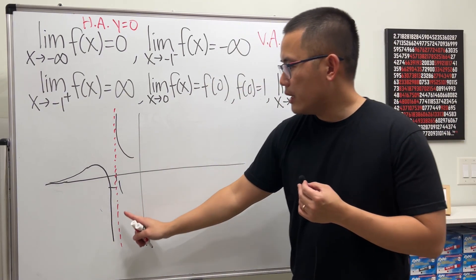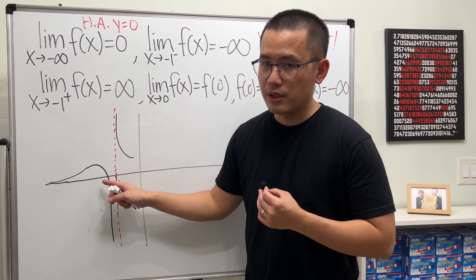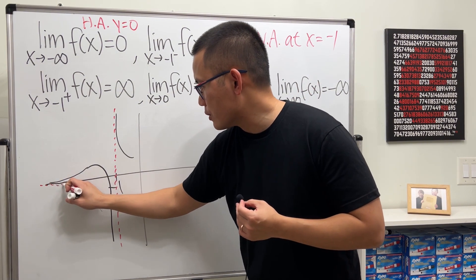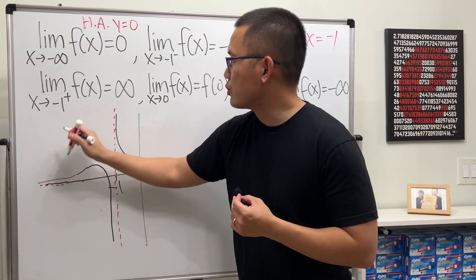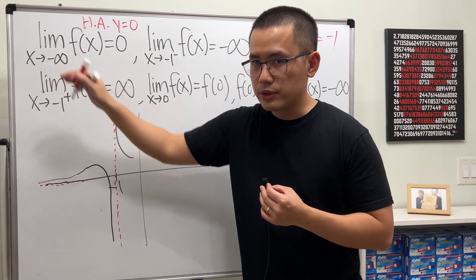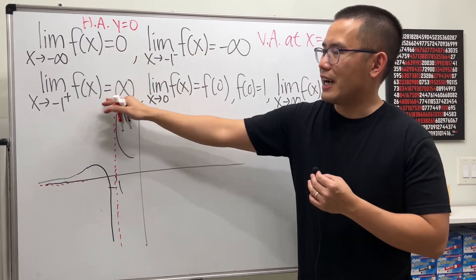And by the way, the function can cross the horizontal asymptote just like this right here. This is still a horizontal asymptote. And the curve is approaching 0 as x goes to negative infinity. So far, we have done this, this, and that.